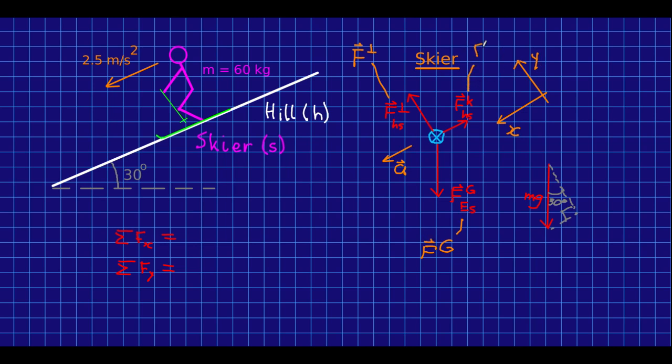And so this is fgx, and this is fgy, and if you do the trig, you'll see this is the opposite, and so it's mg sine of 30 degrees, and this one, be careful, it's negative mg cos of 30 degrees.